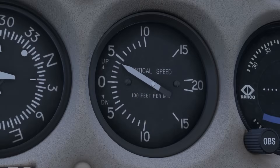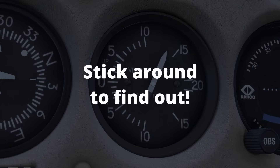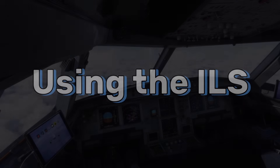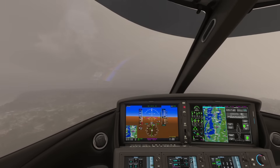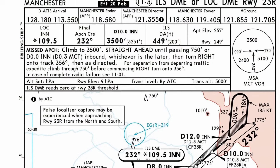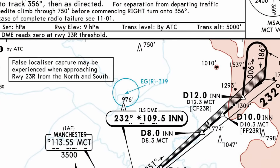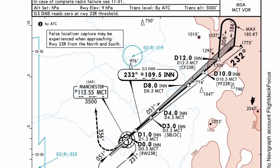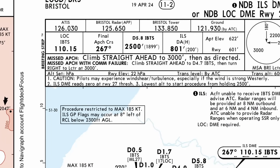Since aircraft use feet per minute, there's an easy trick to figure that out — we'll get to it soon. So how does the ILS work from the pilot's perspective? Every ILS has three pieces of info: a frequency, a course, and an identifier. Finding them is easy — they're right there on your Navigraph or similar charts.